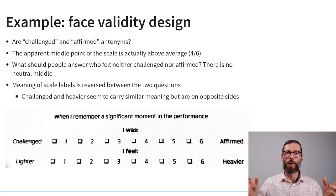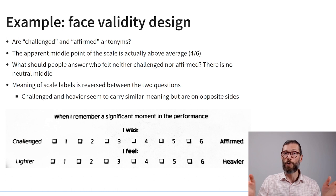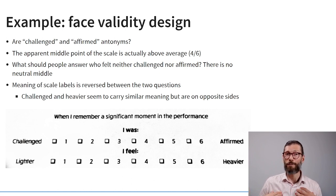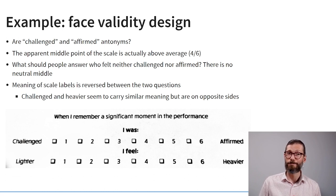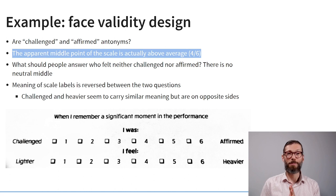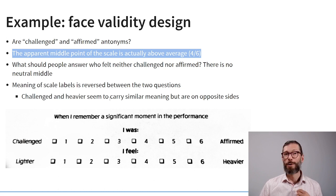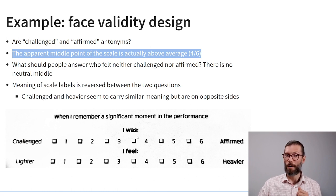Looking at the design: for the first question, the Likert scale has 'challenged' on one side and 'affirmed' on the other. Are those antonyms? Is it impossible to feel both challenged and affirmed simultaneously? Another problem is that what appears to be the midpoint of the scale is actually above average — that checkbox is labeled four, so if you want to communicate a neutral feeling, you'd actually be indicating you're more affirmed than challenged.